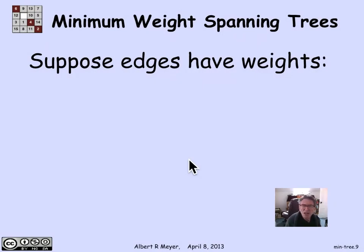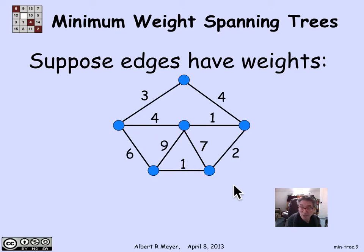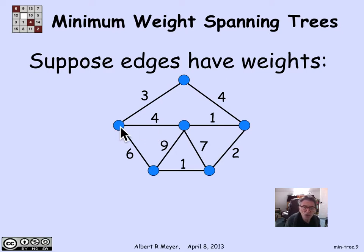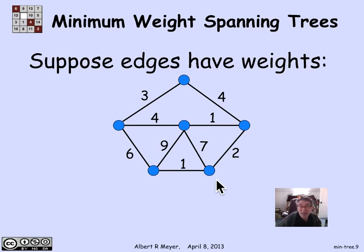The problem gets more interesting when, instead of just finding a spanning tree with a minimum number of edges, the edges have weights, and we want to find a minimum weight spanning tree. Here's an example where we have a simple graph with a bunch of edges and vertices, and the edges are all assigned an integer weight. The motivation is you could think of these weights as indicating the cost of transporting some commodity from one vertex to another directly by a road, or the time it takes to transmit a signal over a channel.